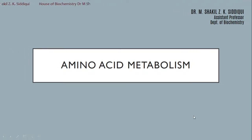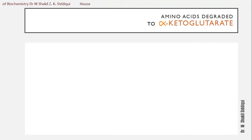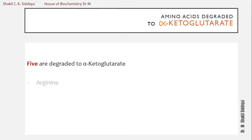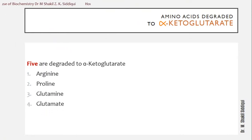The first question is: how many amino acids are degraded to alpha-ketoglutarate? There are five amino acids, namely: arginine, proline, glutamine, glutamate, and histidine.